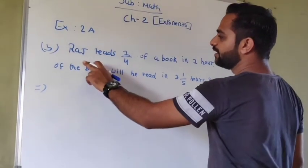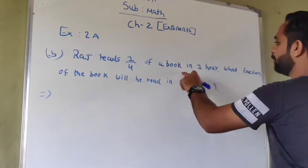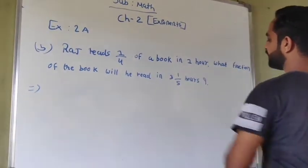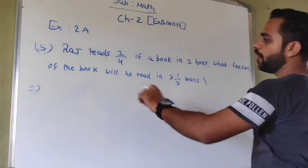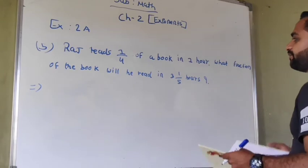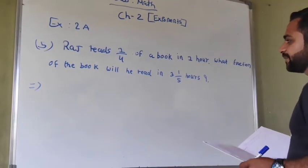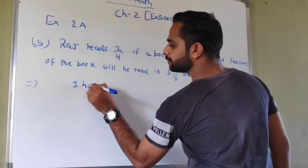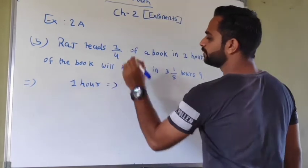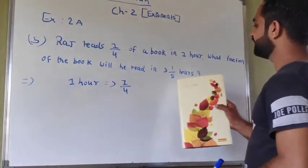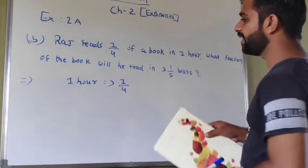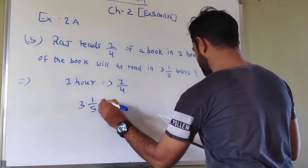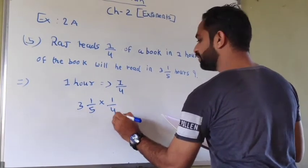Fifth one is Raj reads 1 upon 4 of a book in one hour. What fraction of the book will he read in 3 and 1 upon 5 hours? So 1 hour is equal to 1 upon 4. So 3 and 1 upon 5 we multiply by 1 upon 4.